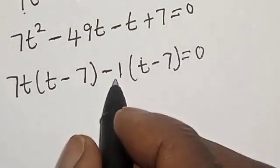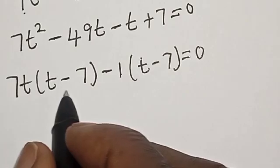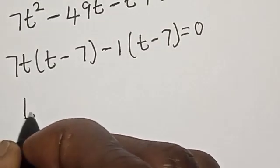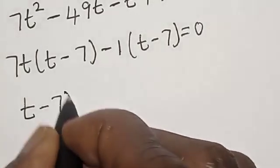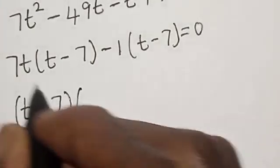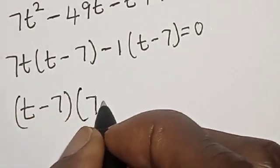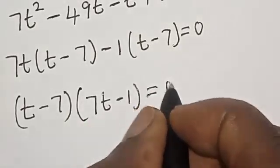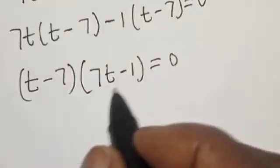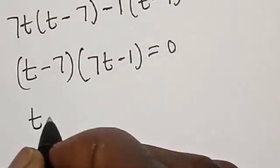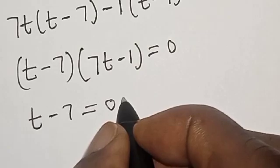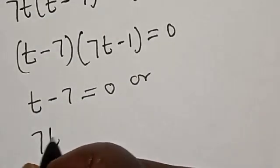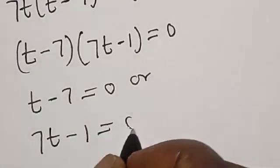So we have 7t into t minus 7, minus 1 into t minus 7, is equal to 0. Factoring out the common term t minus 7, this becomes t minus 7 multiplied by 7t minus 1 is equal to 0. So there are two cases here: t minus 7 equals 0, or 7t minus 1 equals 0.